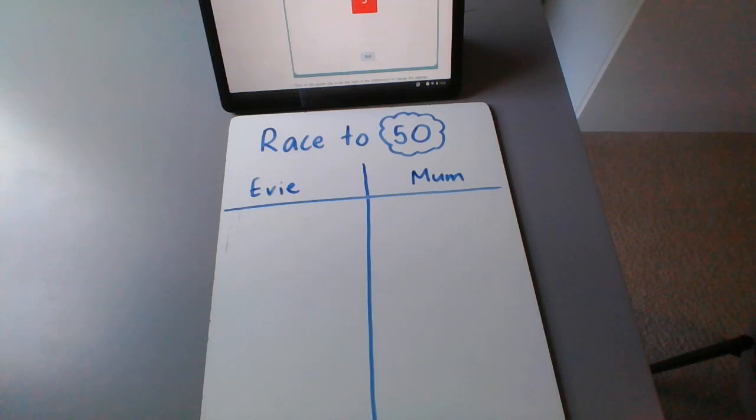So to play Race to 50, the first person rolls the dice twice just to get started to create a sum.